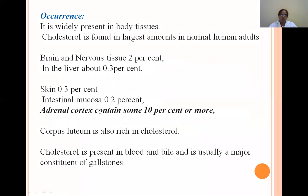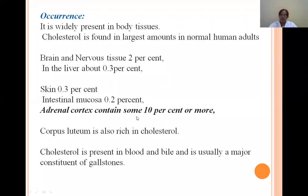Cholesterol is widely present in body tissues and found in the largest amounts in normal human adults. Brain and nervous tissue contain about 2% cholesterol; liver about 0.3%; skin about 0.3%; intestinal muscles about 0.2%. The adrenal cortex contains 10% or more. Cholesterol is mainly present in blood and bile and is usually the major constituent of gallstones.